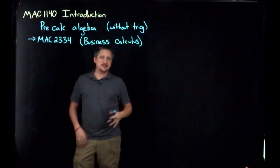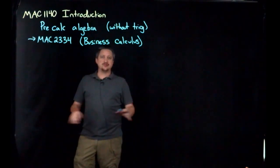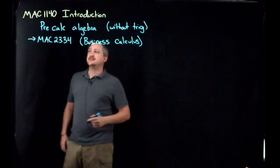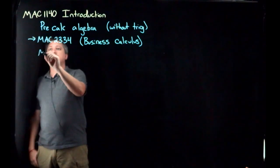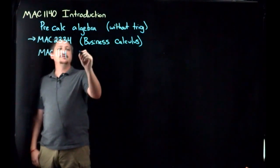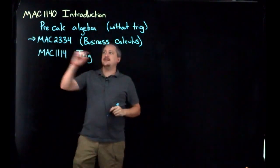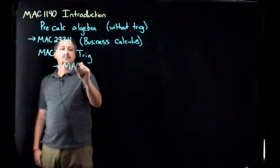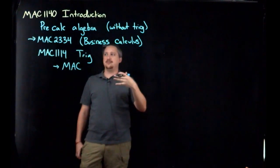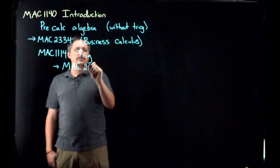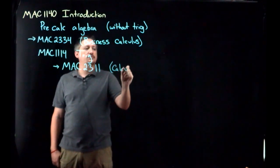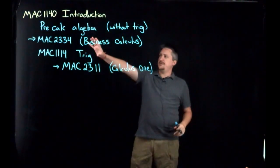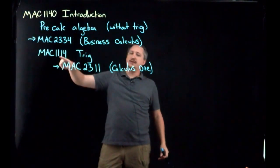However, there are some other options. This is also recommended by a lot of business advisors. Feel free to ask your actual advisor, your academic advisor. They know exactly what to do. Just so you're aware that these things exist, there's also MAC 1114. This is the trig course, and together with MAC 1140 these things together allow you to take the sort of default science-based calculus course, which is MAC 2311, Calculus 1.